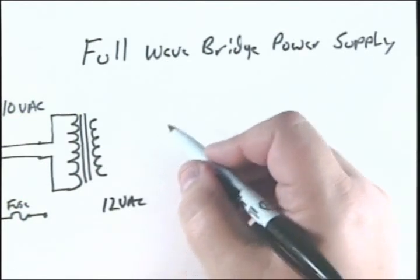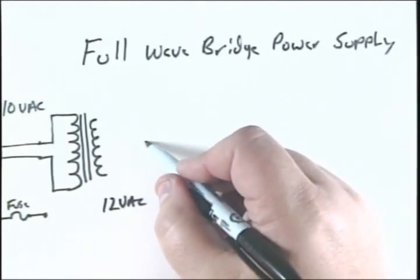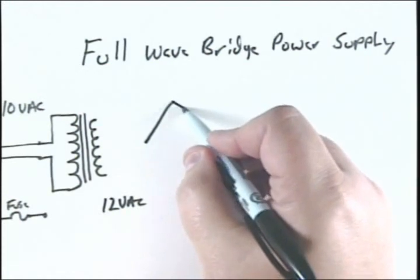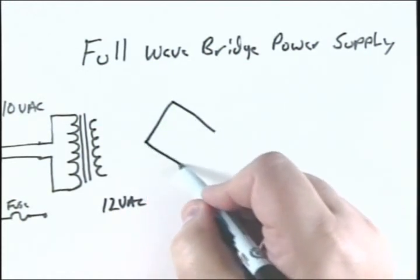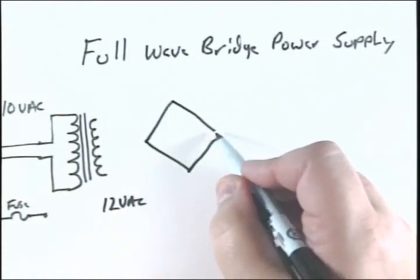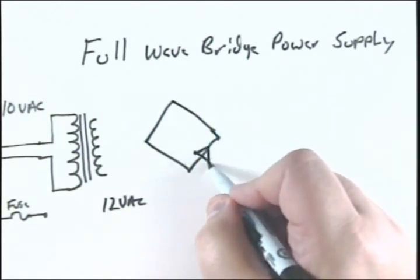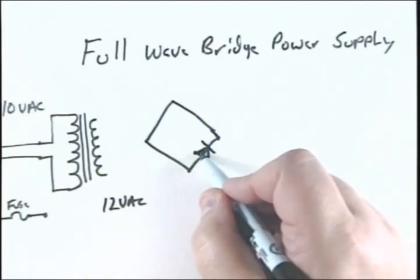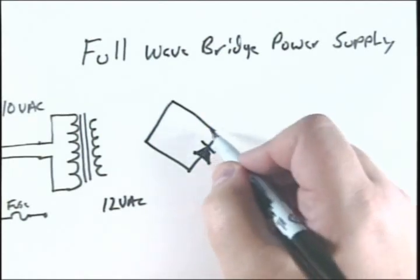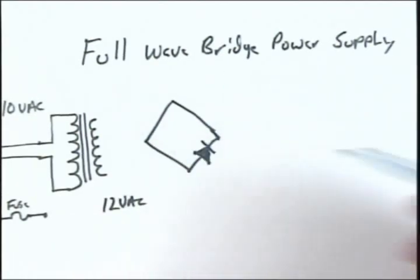When I go to draw a bridge, I usually start this way. I take it and make a square on its corner. Then I put my diodes in where they all point in one direction, so they're all pointing this direction over here.